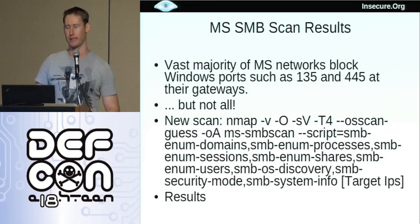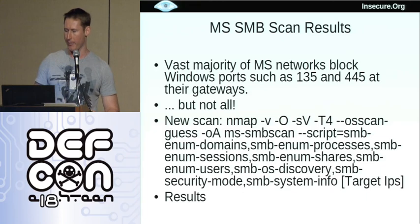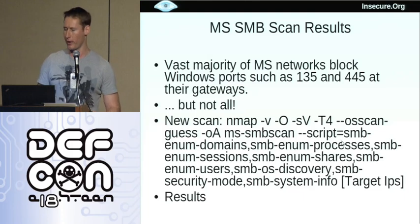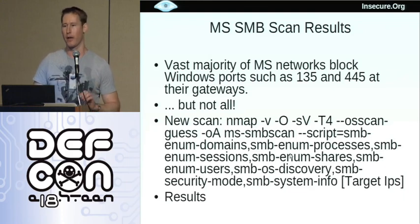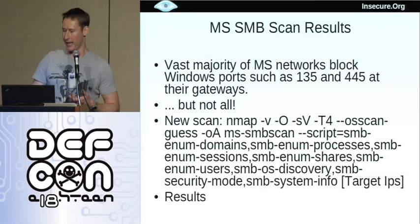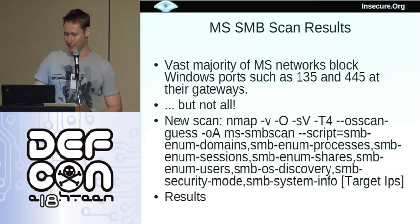But note that I said the vast majority of Microsoft's networks blocked these ports. There were actually some that didn't, and I found dozens of hosts that had port 445 - the more modern of the ports - available. So from that I designed a new scan. Basically I said Nmap, and the key new option is --script to run the Nmap Scripting Engine. And instead of doing the default scripts, we're going to do SMB enum domains, enum processes - basically all of the scripts in the less intrusive categories, like the enumeration scripts and information gathering scripts. Even I'm not crazy enough to do brute force authentication cracking and crack their passwords and then present it at DEFCON.